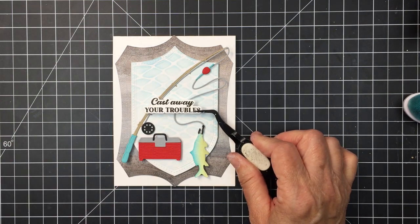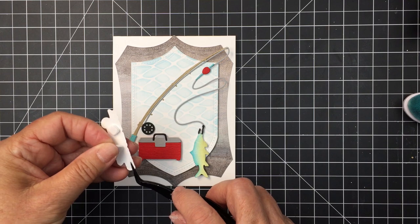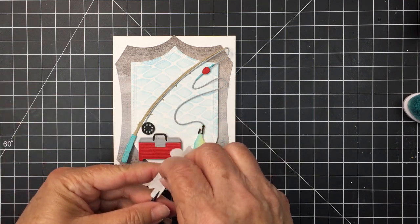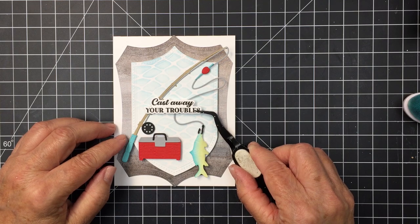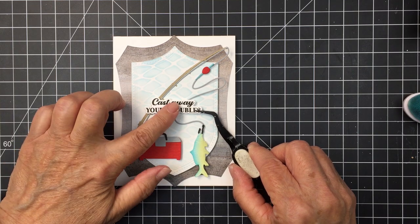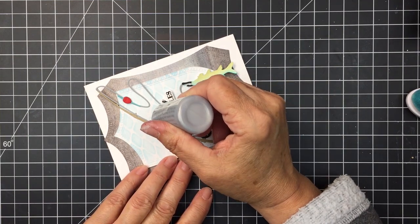Now this sentiment comes from the Fishing Legend stamp and coordinating die set so that's a really great little set too. It has a die for every one of the stamps in that set and it works really really well. I've stamped that out in black ink and of course die cut that out.